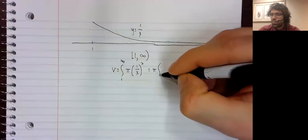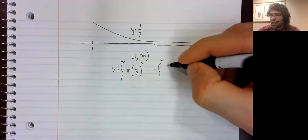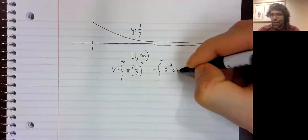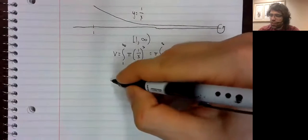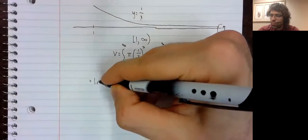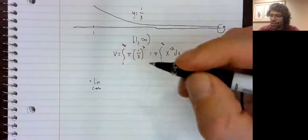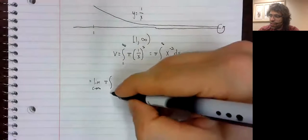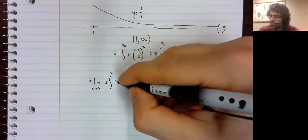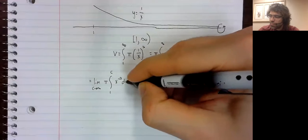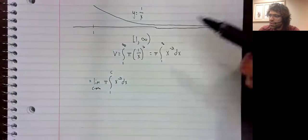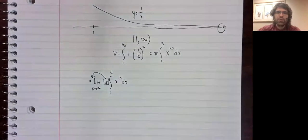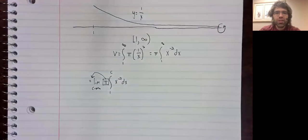We can pull pi out, and now we will use our definition of the improper integral. So we should rewrite this as a limit. Pi is in front of the integral, so that pi should be in front of the limit.